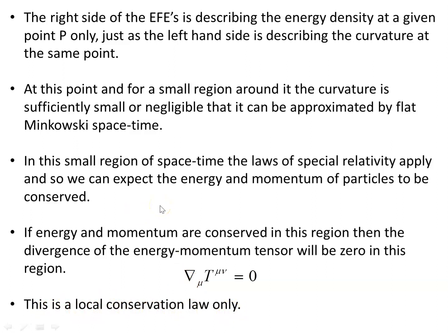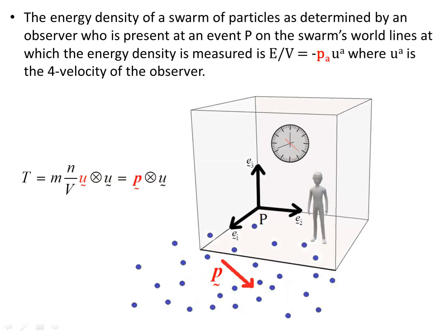In this small region of space-time, the laws of special relativity apply, so we can expect energy and momentum of particles to be conserved, because in that small region it's approximately flat, and in flat space-time energy and momentum for free particles is conserved. If energy and momentum are conserved in this region, the divergence of the energy-momentum tensor will be zero there. This is still only a local conservation law — only at a given point P and a region sufficiently close around it. The covariant derivative is used because the point P is a general point that could be anywhere in the manifold.